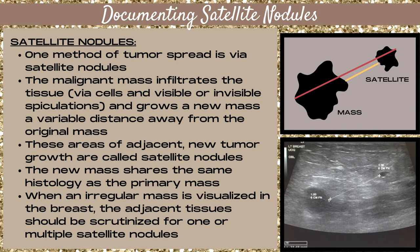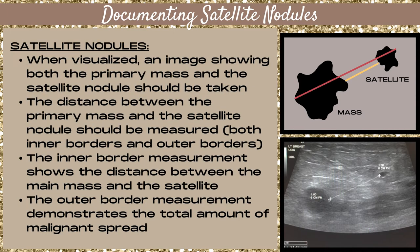The new mass shares the same histology as the primary mass. When an irregular mass is visualized in the breast, the adjacent tissues — at the very least that quadrant — around the mass should be carefully scrutinized to see if there are one or more satellite nodules present. When you visualize a satellite mass, you need to take an image showing both the primary mass and the satellite nodule.